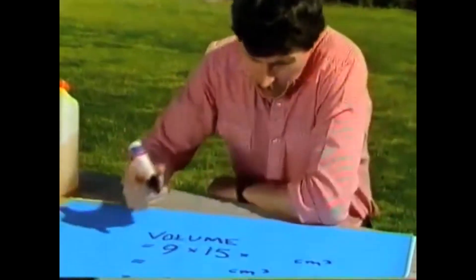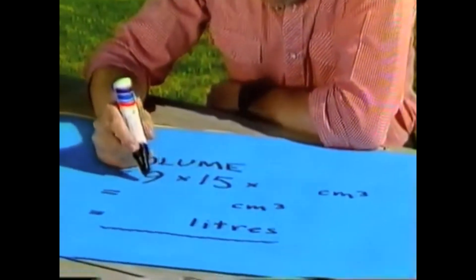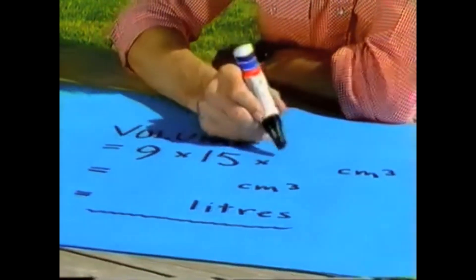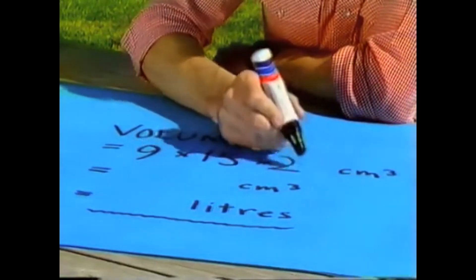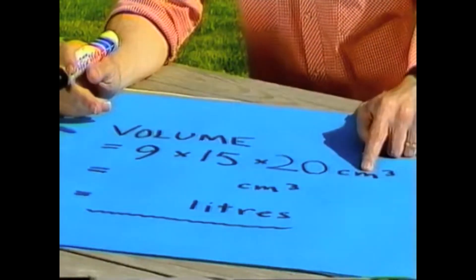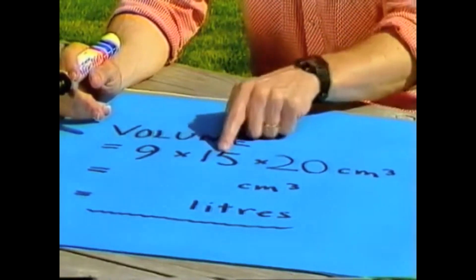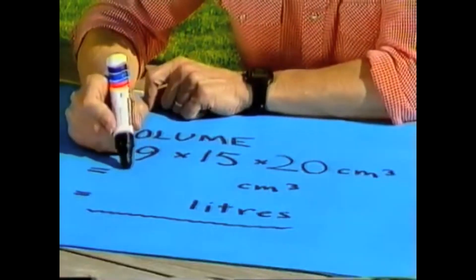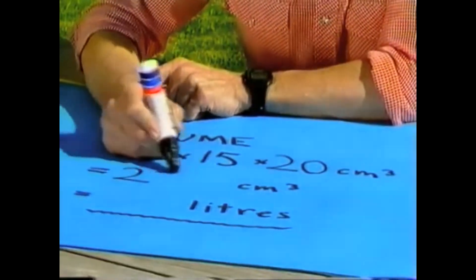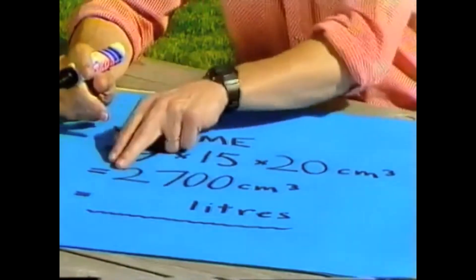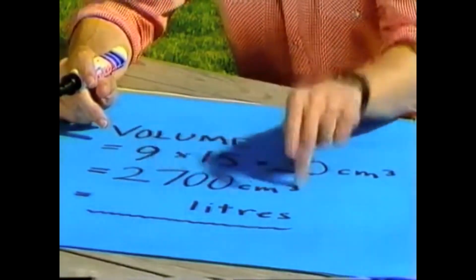So the three dimensions we need are nine centimeters for the width, 15 for the measurement across the side, and then 20 for the average height of the container — and the answer will be in cubic centimeters. 9 times 15 times 20. Well, 15 times 20 comes to 300, times 9 gives us 2,700 cubic centimeters.